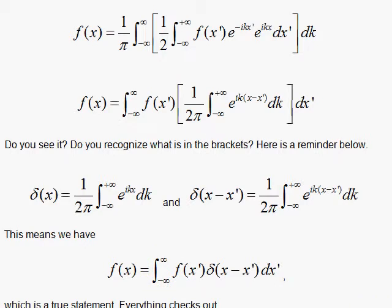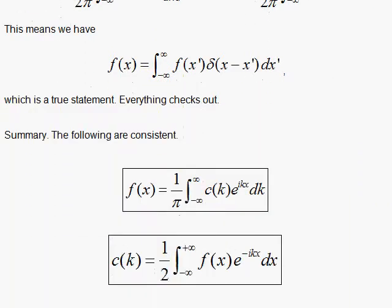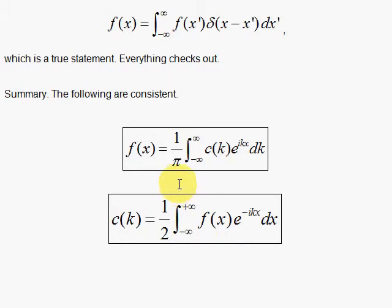So we're very happy with this, and we can summarize the results as what we started with, because it checked out. Now, and this is the Fourier transform here, the Fourier transform of this F of X, this is it. This is the Fourier transform.